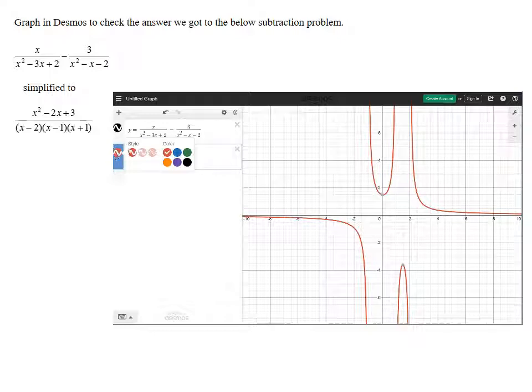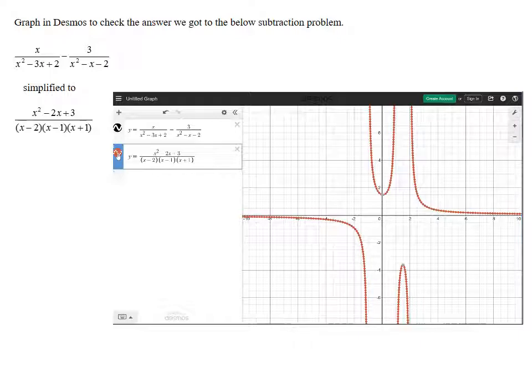If I wanted to, I could make it like little dots to actually show it. So if I turn it off, I have the original graph. If I turn the simplified graph on, notice it's right over top. So this is a pretty good check because we're seeing exactly the same thing with both the original problem and the simplified result.